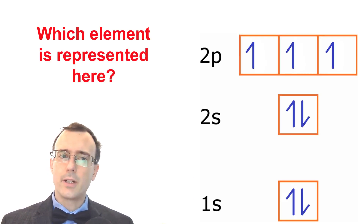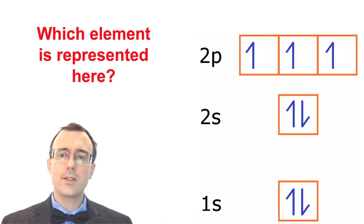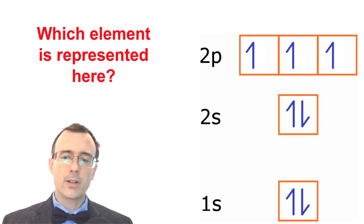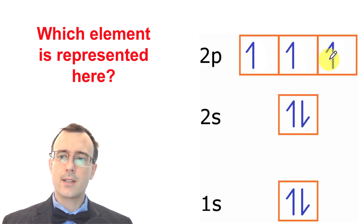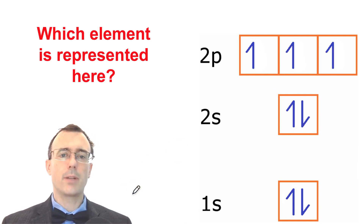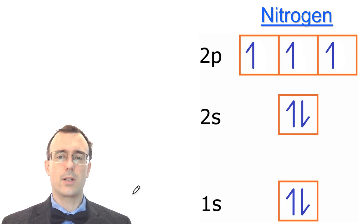Which element is represented here? There are a few different ways that you could solve this, but perhaps the easiest way would simply be to count the electrons. How many electrons do we have here? That's right: 2, 4, 5, 6, and 7. We look up element number 7 on the periodic table and it is nitrogen.